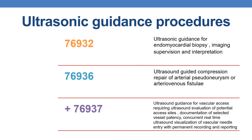First, coming to ultrasonic guidance procedures. The first CPT is 76932, which deals with ultrasonic guidance for endomyocardial biopsy, imaging, supervision, and interpretation. The next CPT is 76936, which deals with ultrasound guided compression repair of arterial pseudoaneurysm or arteriovenous fistulae.